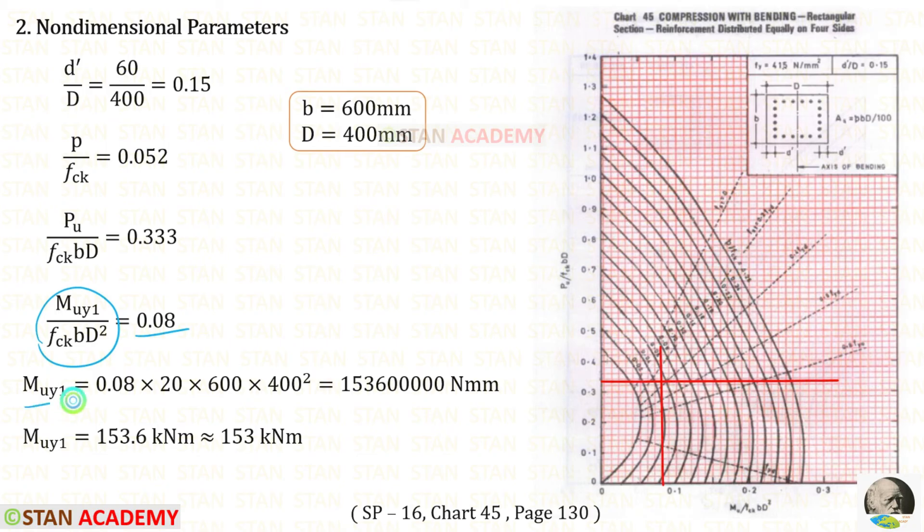This point is 0.08. So, for Muy1 upon fck·b·D², we will get exactly 0.08. So, for Muy1, we will get this. Then, we can convert that into kilonewton meter. Then, we can round this value as 153 kNm.